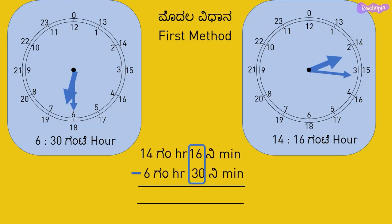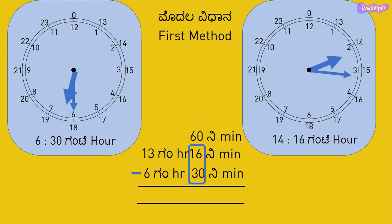30 minutes cannot be subtracted from 16 minutes, so we need to borrow from the hour side. We borrow 1 hour, which is equal to 60 minutes, from the hour side and add it on to the minute side. Now 14 hours is reduced by 1 hour and becomes 13 hours. Since 60 minutes is added to 16 minutes, we have 76 minutes. 30 minutes can now be subtracted from 76 minutes, giving a difference of 46 minutes.